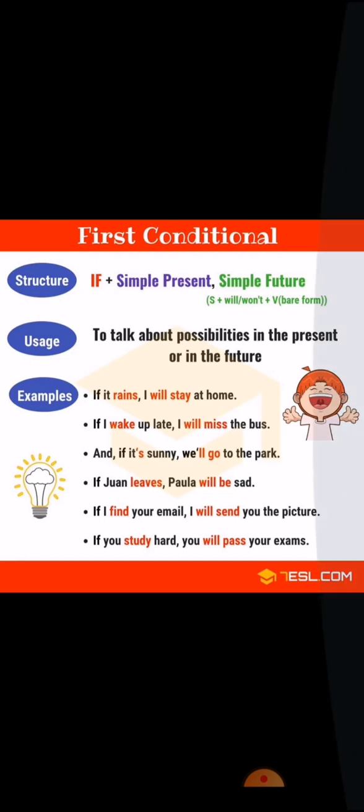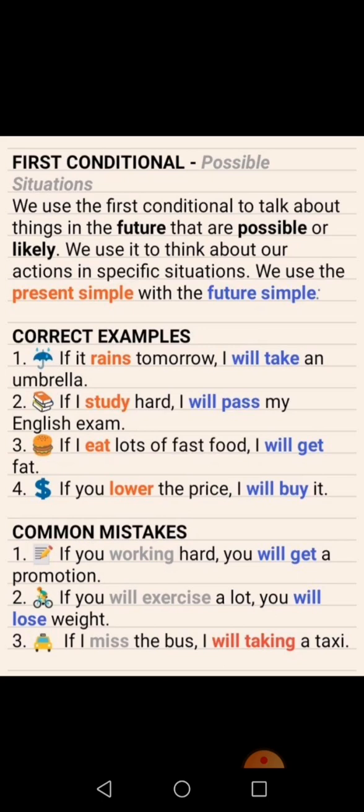Here are more examples showing future possibility. 'If it rains tomorrow' — this is a future possibility, describing how likely something is to happen. Notice the comma after the if-clause. The result clause 'I'll take an umbrella' can also be placed at the start — in that case, no comma is used after it. Further examples: 'If I study hard, I'll pass my English exam.' 'If I eat lots of fast food, I'll get fat.' 'If you lower the price, I'll buy it.'